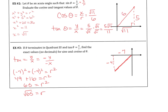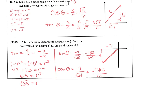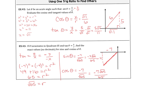They ask for exact values of sine and cosine. Sine of theta = y/r = -4/√65. Rationalizing gives -4√65 over 65. Cosine of theta = x/r = -7/√65, which rationalizes to -7√65 over 65. The key to this problem is recognizing we're in quadrant three, so both x and y are negative — that tells us the correct signs on each function.